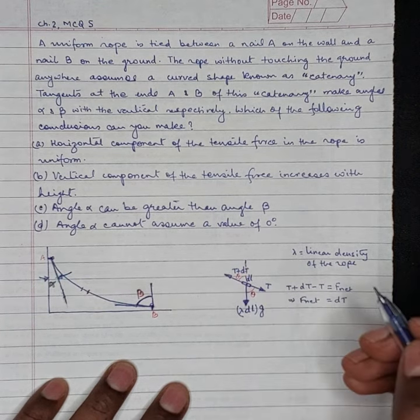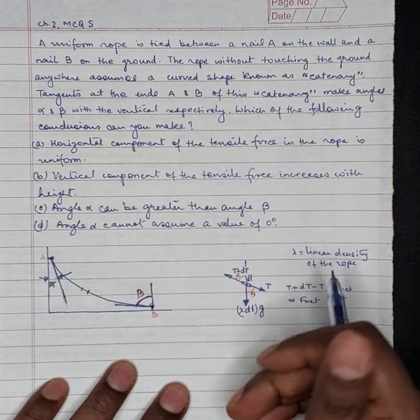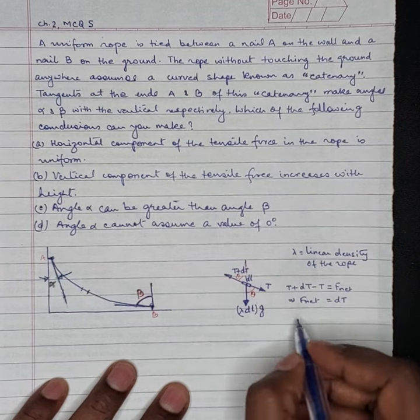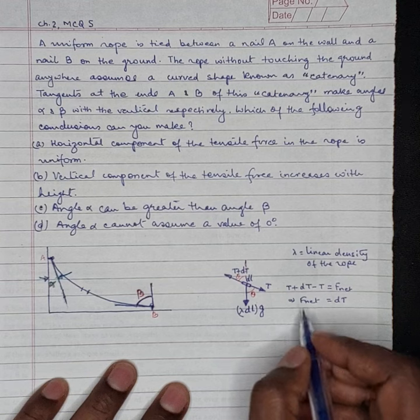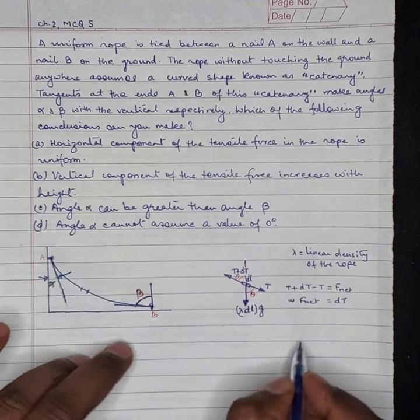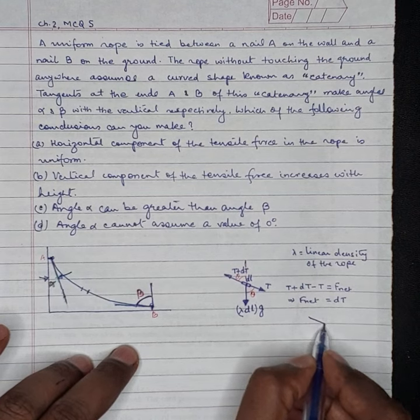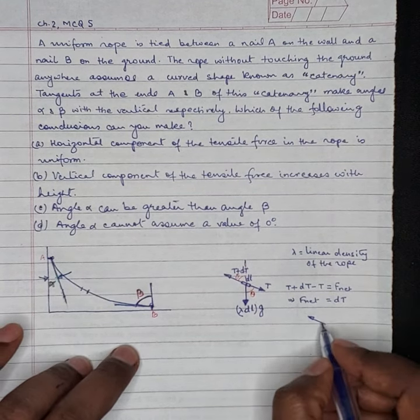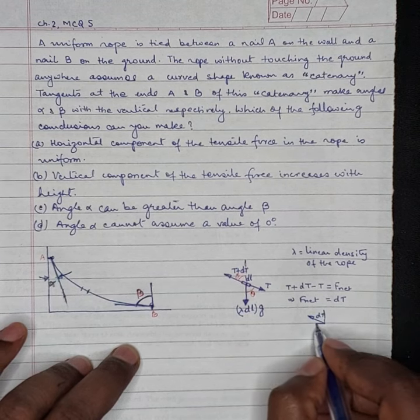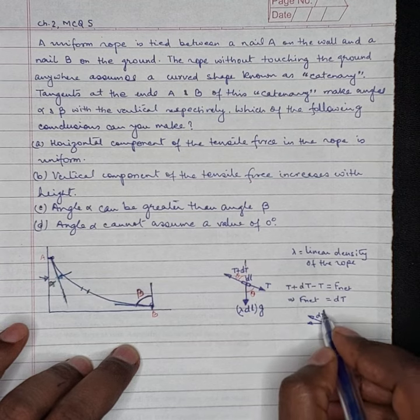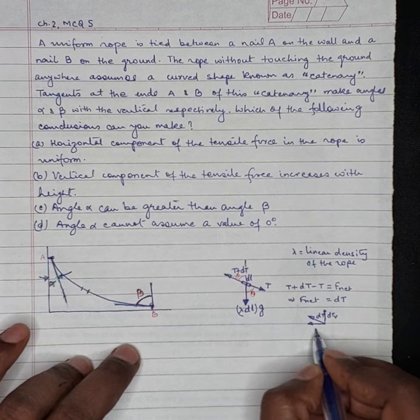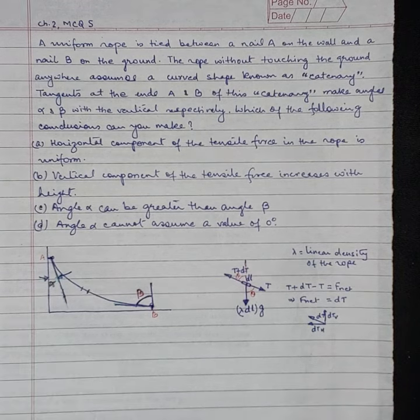So dT will be in this direction. So if we take the vertical component, this dT is made up of two components: one will be vertical component. So if we show this way, this is your dT. This is vertical component, this is horizontal component. So dT_V, dT_H.